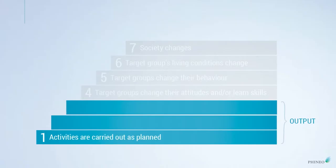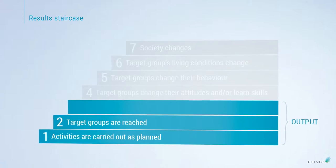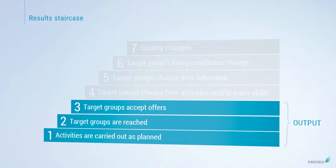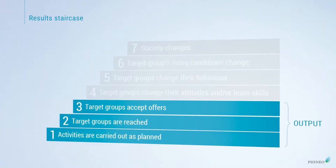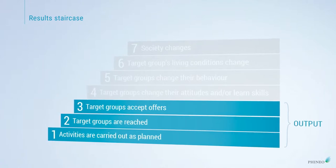But what do we mean by outputs? In order for social impact even to emerge, something needs to happen. This is where we're talking about the activities of your projects. The activities must take place, the target group needs to take part in the activities, and the target group needs to accept the activities. What we mean by acceptance is that it meets their needs, because if the target group accepts the activities, then we can start talking about the emergence of social impact.